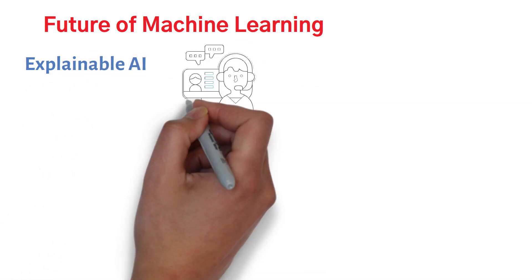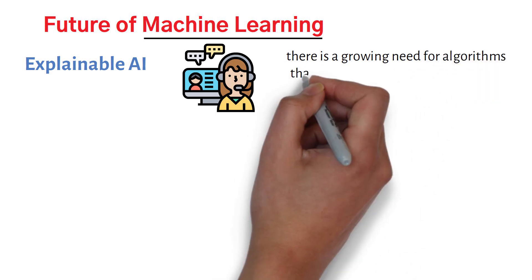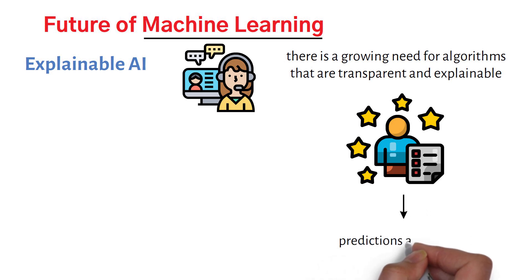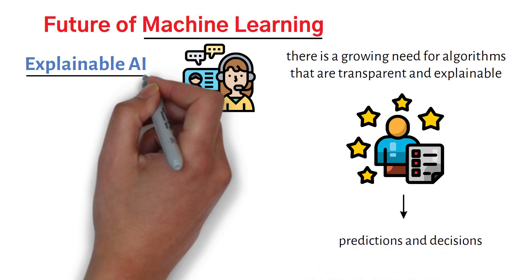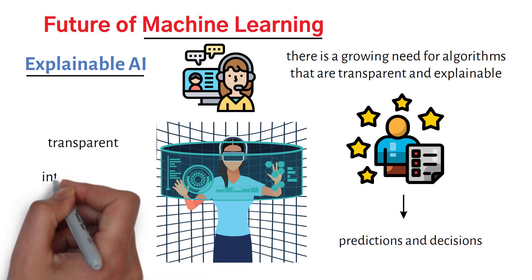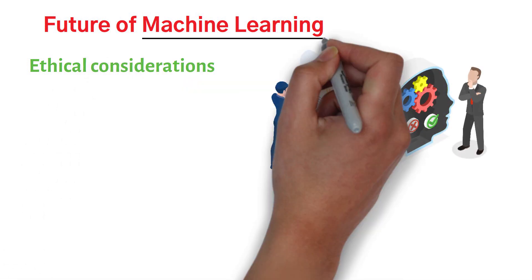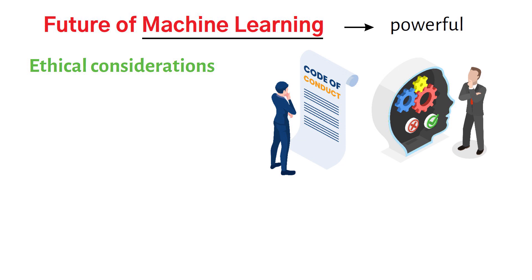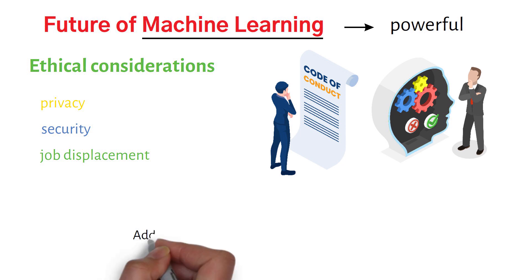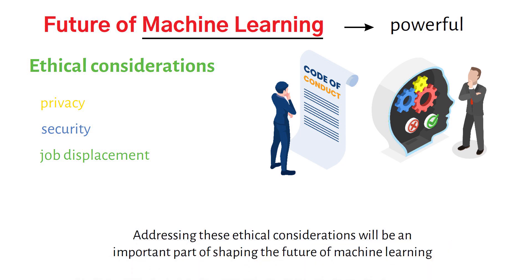Explainable AI: as machine learning becomes more widespread, there is a growing need for algorithms that are transparent and explainable, so that users can understand how they are making predictions and decisions. Explainable AI is an emerging field that seeks to develop more transparent and interpretable algorithms. There are also growing concerns about its impact on privacy, security, and job displacement, and addressing these ethical considerations will be an important part of shaping the future of machine learning.